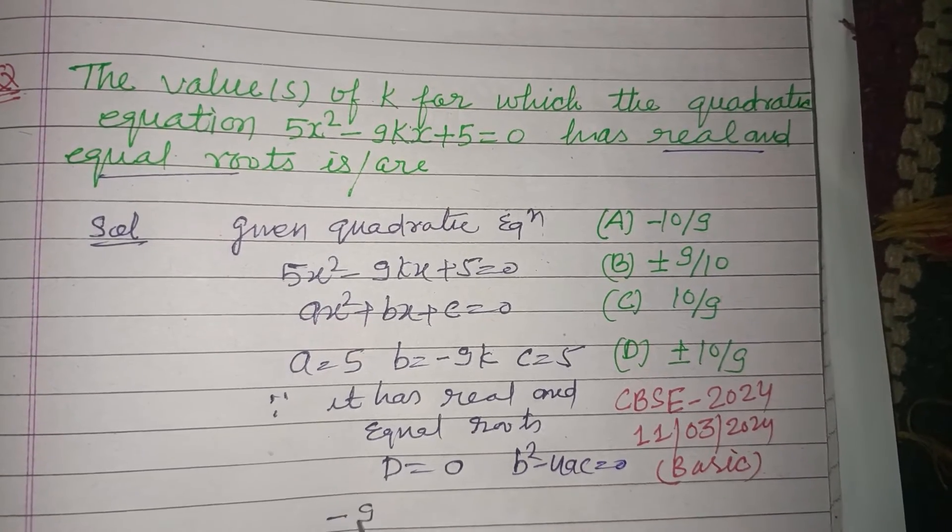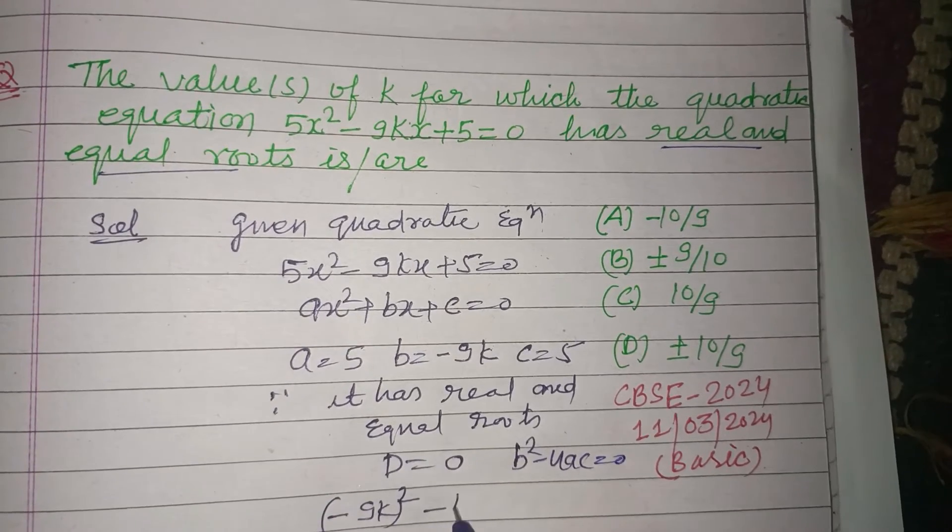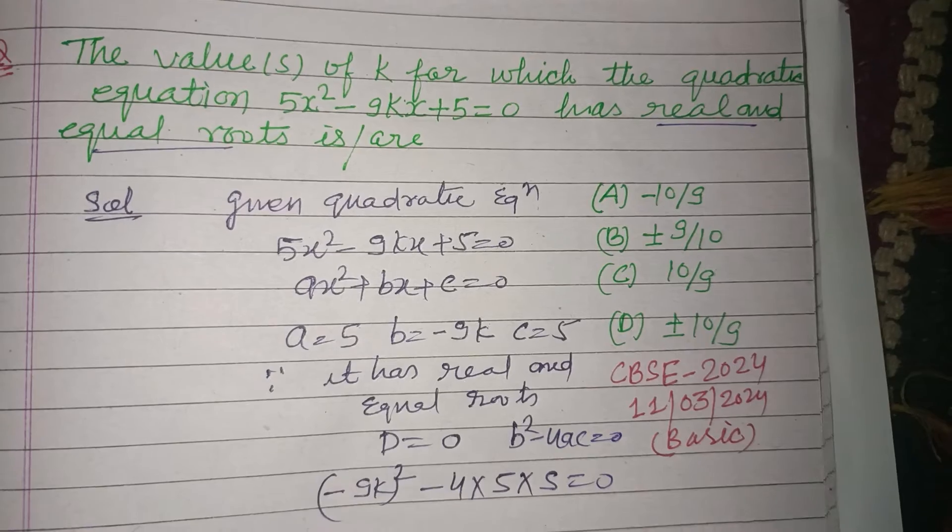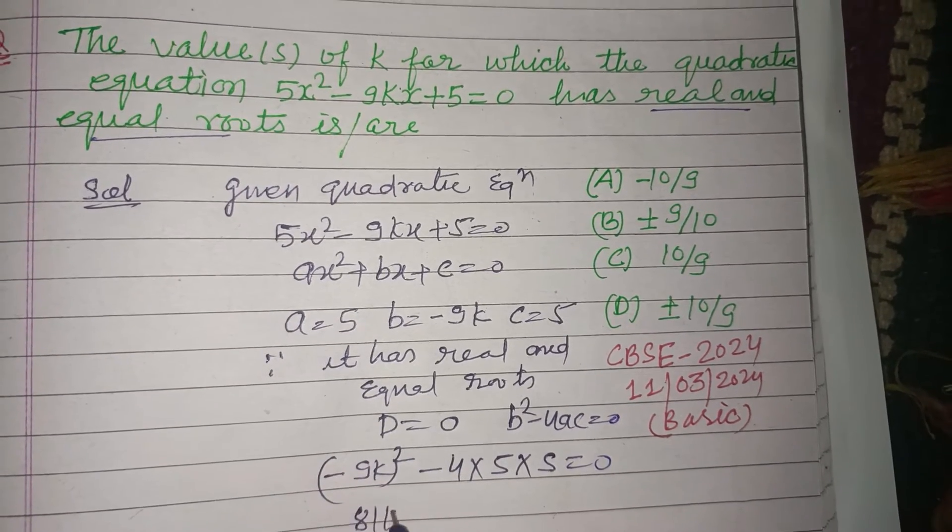So b is -9k, whole square. 4a is 5 and c is 5. So this is 81k² minus 4 × 5 × 5, that's 100.